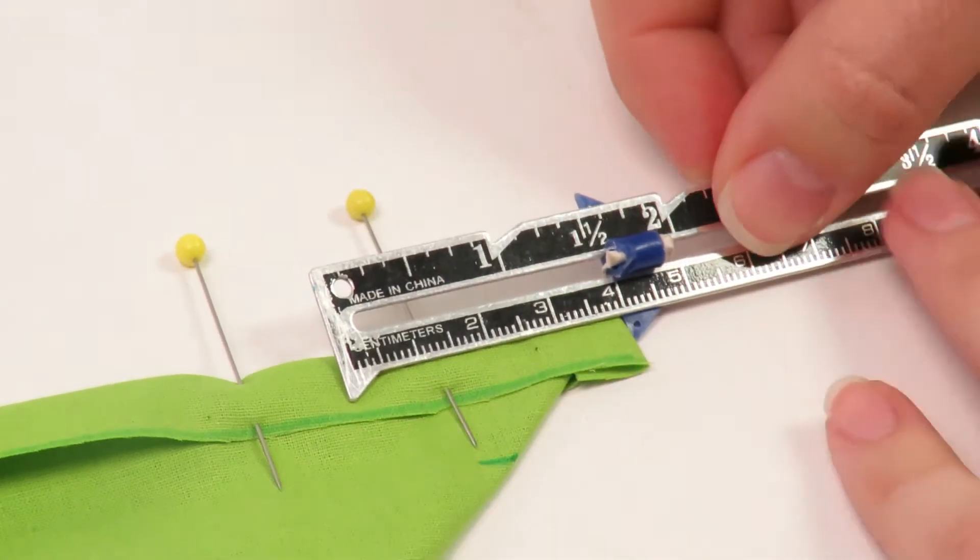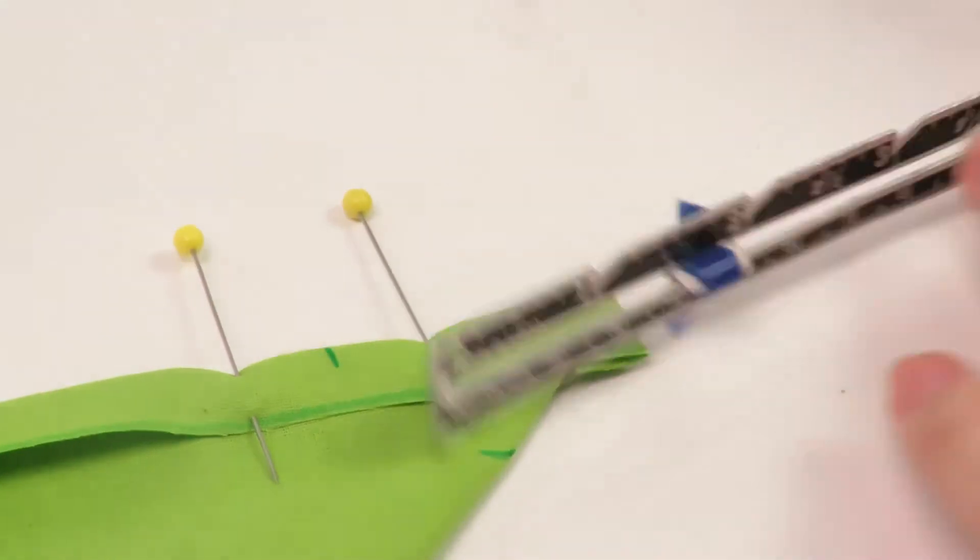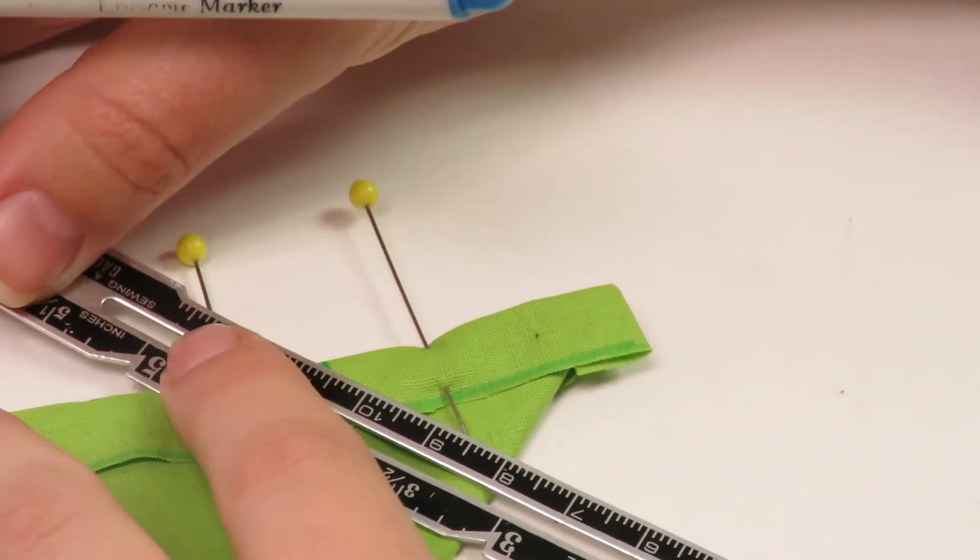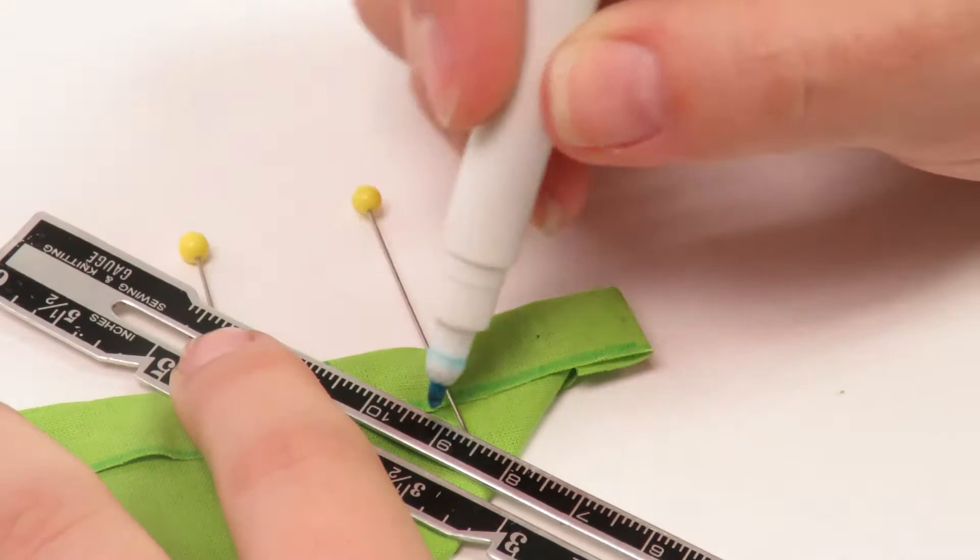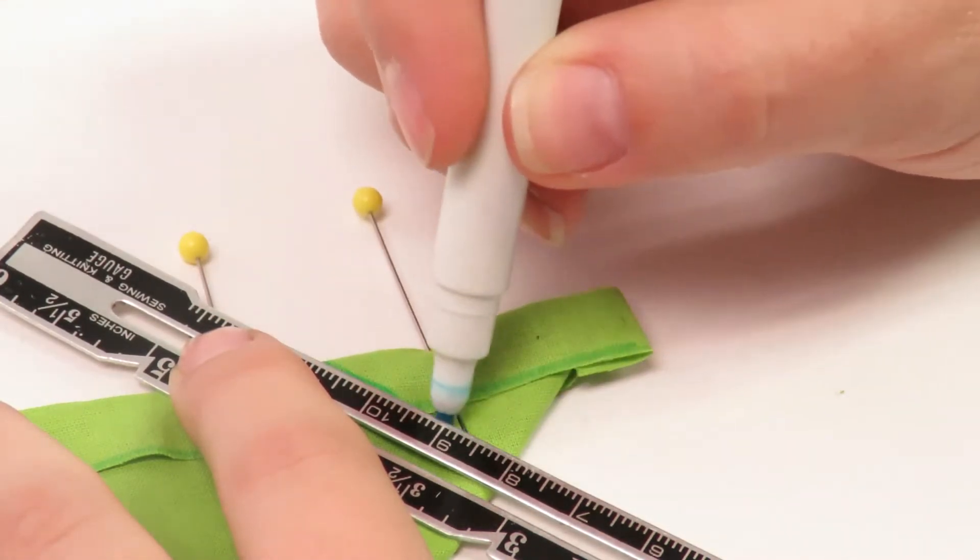In this case, our second seam allowance measured two centimeters, thus our second mark measures four centimeters inward from the corner. Connect your two marks with a diagonal line across using your fabric pin.